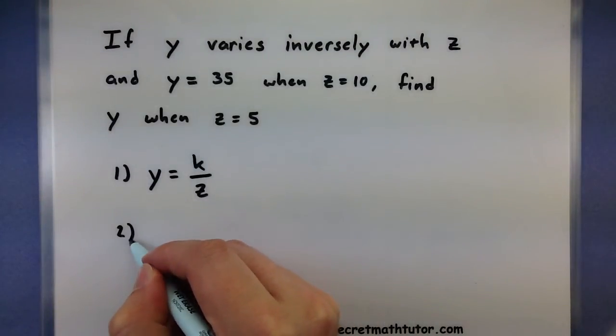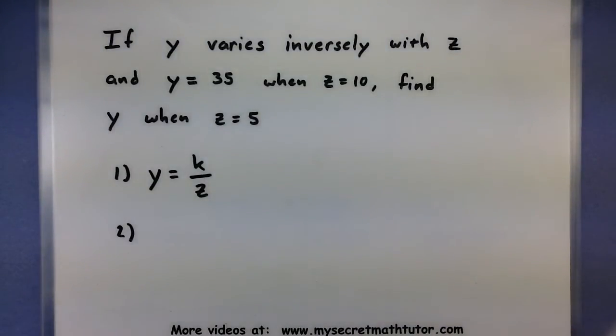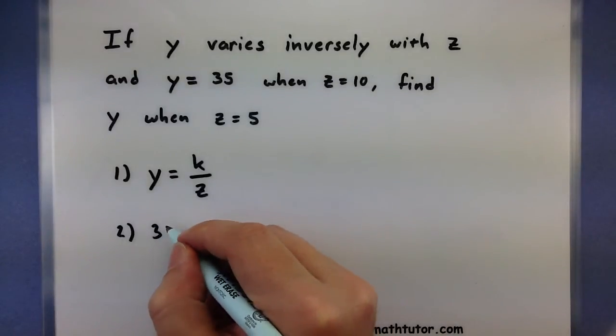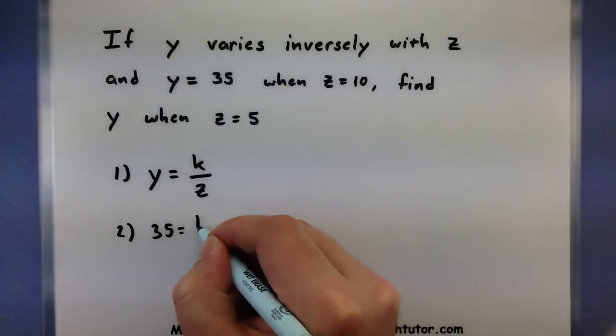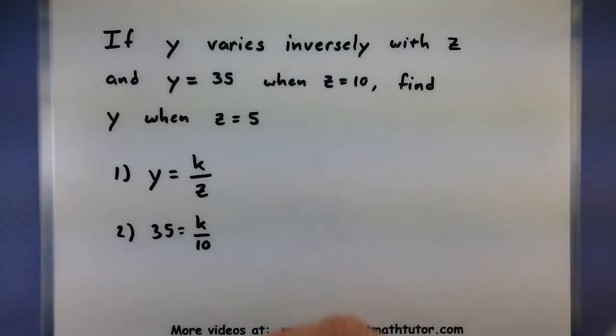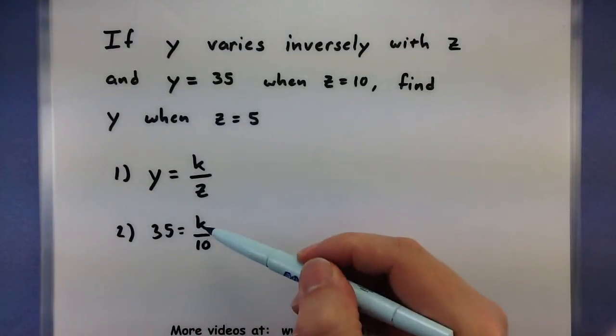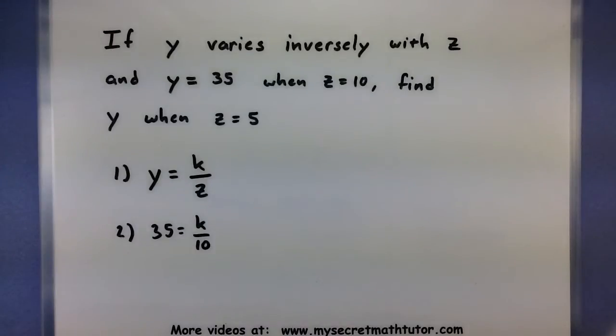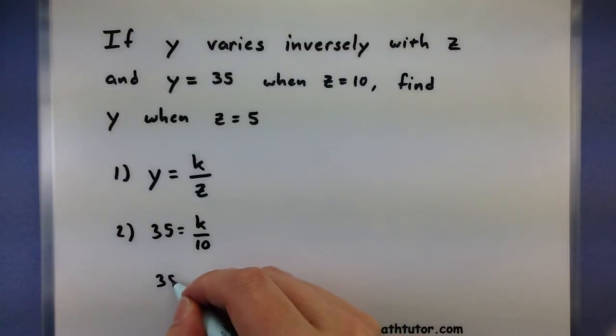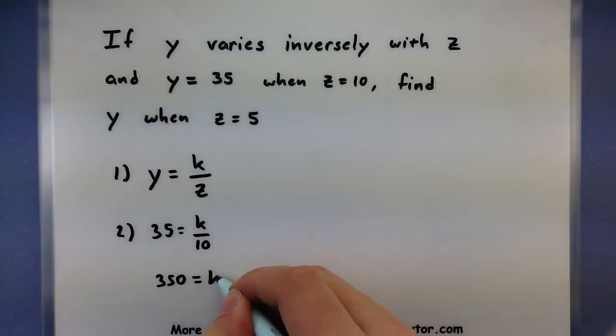Now we need to figure out what k is, so we'll use the next little bit of information. So y equals 35 when z equals 10. Notice how with that plugged in there, you have just enough information that you could figure out what the k is. So let's multiply both sides by 10 and we'll get that k is equal to 350.